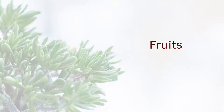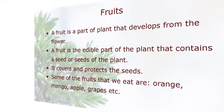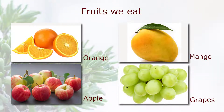Fruits. A fruit is a part of a plant that develops from the flower. A fruit is the edible part of the plant that contains the seed or seeds of the plant. It covers and protects the seeds. Some of the fruits that we eat are orange, mango, apple, grapes, etc.